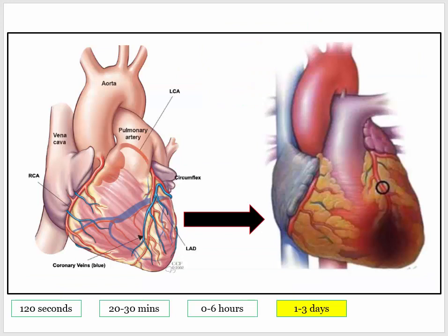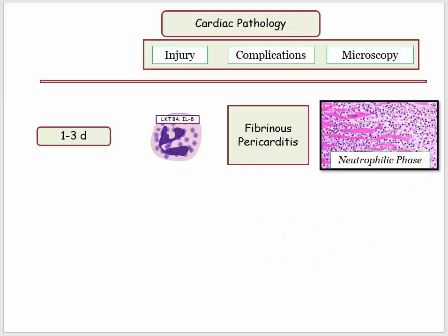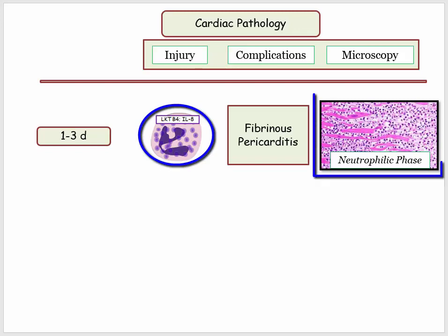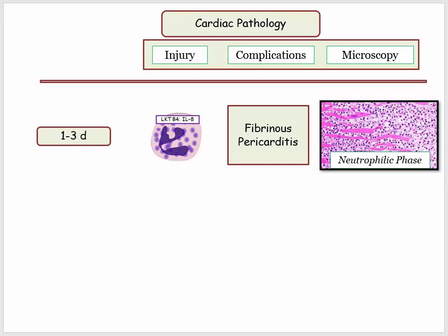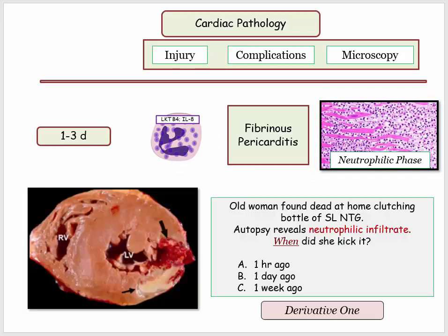Let's move on to the next important time frame: one to three days. We have myocardial injury, so which cells are typically the first responders? The PMNs — they should be first to arrive. Days one through three of myocardial injury are characterized by the neutrophilic phase. The principal complication during this phase is fibrinous pericarditis. Here's the classic question: an old woman found dead at home; autopsy of the heart reveals a neutrophilic infiltrate — when did she die? The neutrophils time her death somewhere between one and three days.